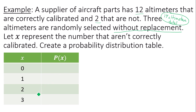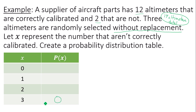If you are considering altimeters that aren't correctly calibrated and you have two that are not, it is impossible for you to get three altimeters that aren't correctly calibrated. So the probability that three altimeters are not correctly calibrated would be zero — it's not possible. There are only two altimeters that are not correctly calibrated.